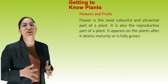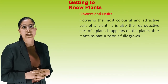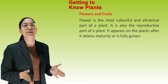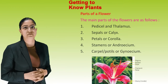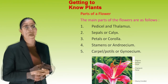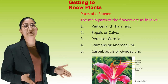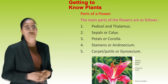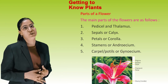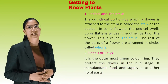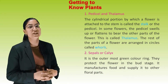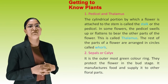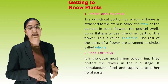Flowers and Fruits: Flowers are the most colorful and attractive part of the plant, and also the reproductive part. Parts of a flower: pedicel and thalamus — the cylindrical portion by which a flower is attached to the stem is called the stalk or pedicel. In some flowers, the pedicel swells up or flattens to bear the other parts; this is called the thalamus. The remaining parts of the flower are arranged in circles called whorls.